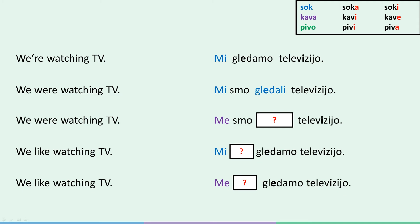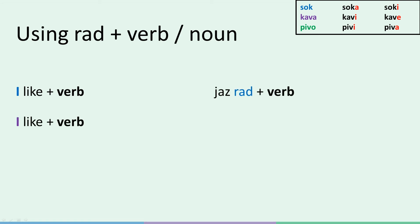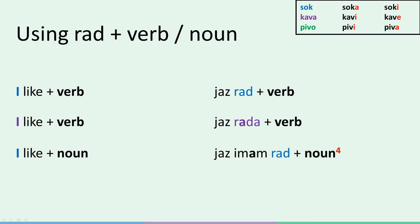Sticking to the same rules, we get the following answers. If you're a beginner and all of this grammar is a bit too much, but you'd still like to take something practical from this lesson, do the following. If you want to say 'I like' plus a verb in Slovene and you're a male, say jaz rad. If you want to say 'I like' plus a verb and you're a female, say jaz rada. With nouns, if you're a male, say jaz imam rad plus a noun in the fourth case. And if you're a female, say jaz imam rada plus a noun in the fourth case.